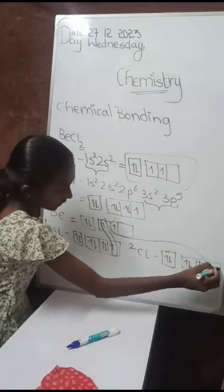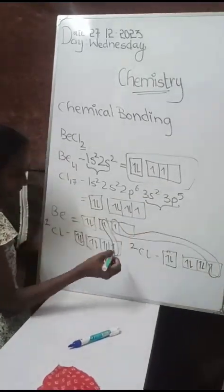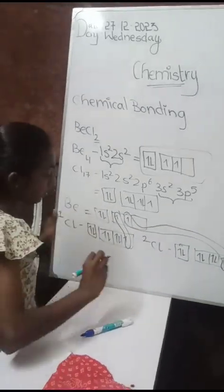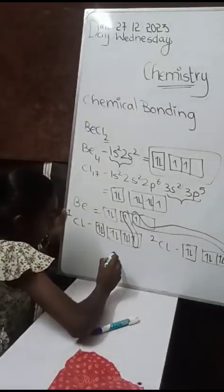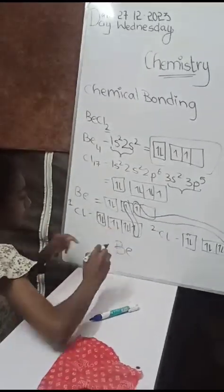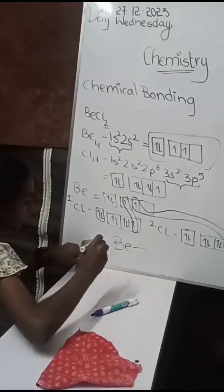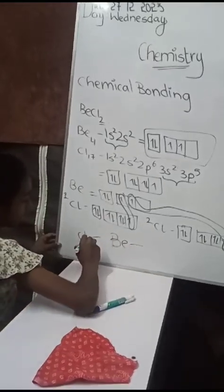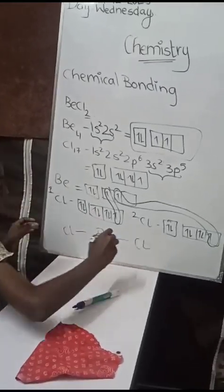Now we are going to write the chemical bond formation. B is the central metal atom. We have to put it in center with two chlorines on the side. Here one bond, here one bond. Now we got it.